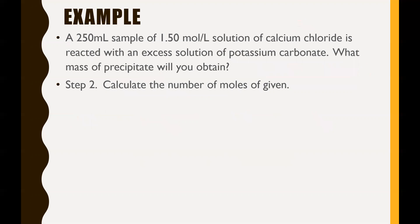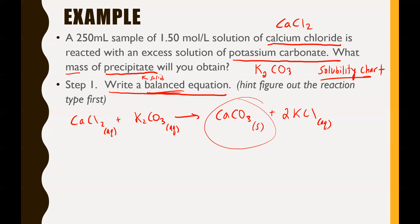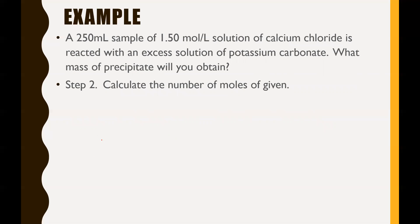Step two: calculate the number of moles given. These questions break it down to a long process. Usually I would just write it underneath, but this question breaks it down for us. The number of moles given - keep in mind we had this concentration, 1.50 mol/L, of this much sample of calcium chloride. Use your units to help you figure out what equations you're dealing with. Since it's moles over liters, we need to say this equals some amount of moles over some amount of liters.